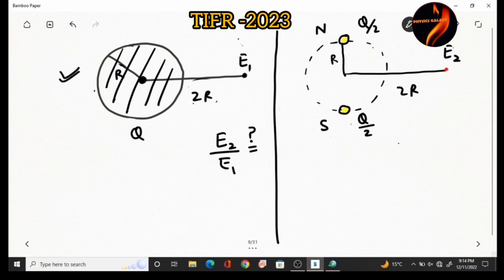In this case, we know that if we have a solid sphere, then electric field outside can be simply given by considering this charge placed at the center. So electric field E1 can be given as 1 by 4 pi epsilon 0, q divided by 2r squared.